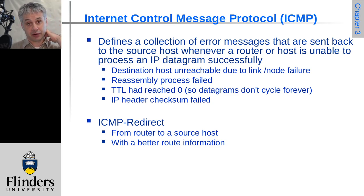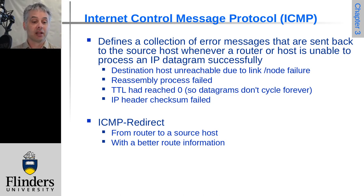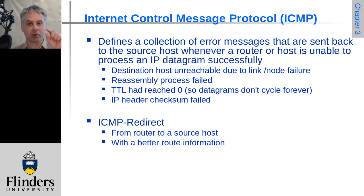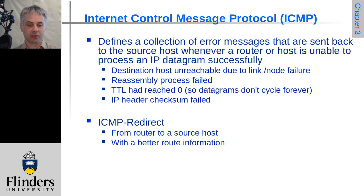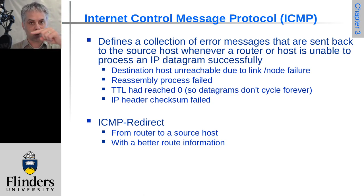If the TTL — time to live — of a packet reaches zero, that can also be reported back via ICMP. This TTL reporting is used for tools like TraceRoute, where you send packets out with differing TTLs increasing by one each time, so you get the TTL-reached-zero point at progressive hops through the network, allowing you to trace where packets are going.